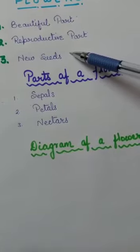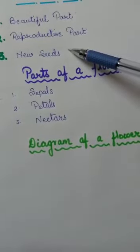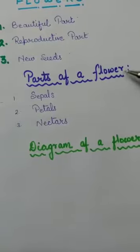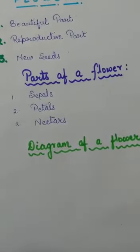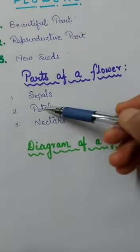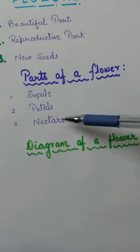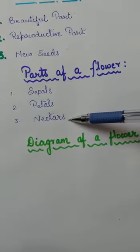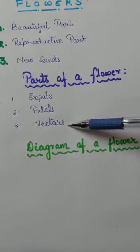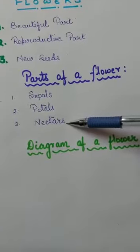What are the parts of a basic flower? Parts of a flower are petals, sepals, and nectar.